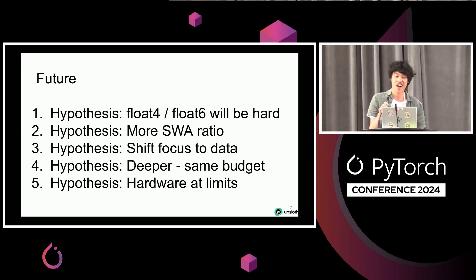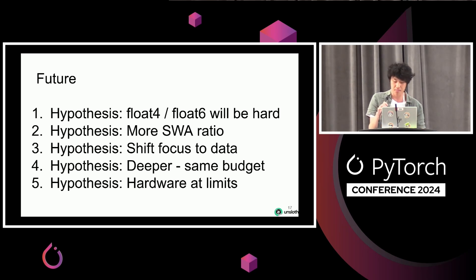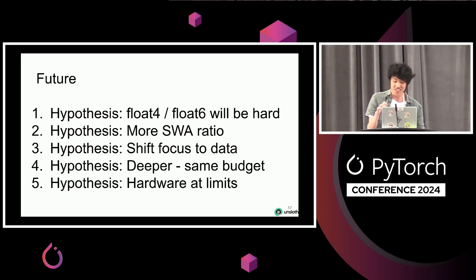For my hypotheses about the future: Float4 and Float6 will actually be very hard to train — research papers show this is a bit complicated, and we still haven't solved the Float8 problem. It's probably possible but hard. More people will use sliding window attention; global attention will decrease. People will shift focus to more and better high-quality data, and also deeper models — more layers, thinner models, but more layers — which will also reduce the number of FLOPs. My hot take is that hardware is kind of at its limits. Bit representation was the main driver of performance, and you can go to Float2, Float1 — but then what's next, Float0? Float4 is really the limit of hardware.